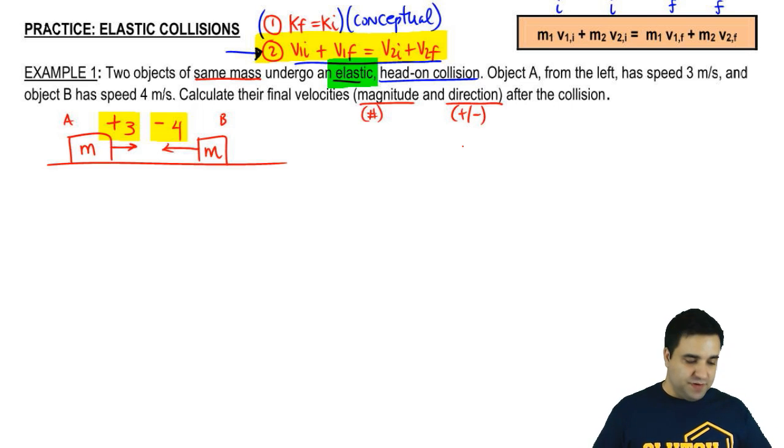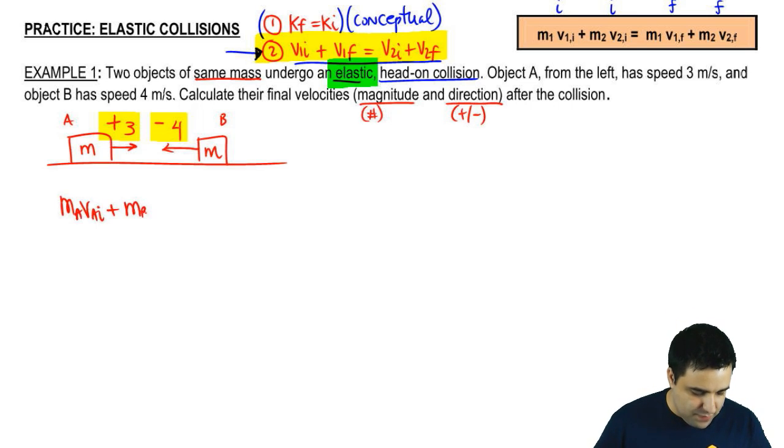How are we going to do this? It's a collision conservation momentum. So, M1V1, or in this case, MAVA, plus MBVB, both initial, MAVA, plus MBVB, final.